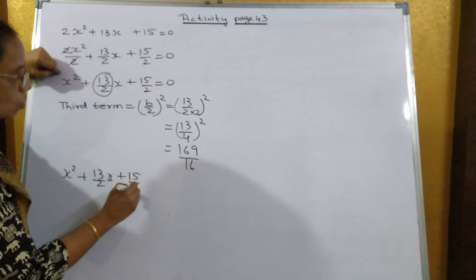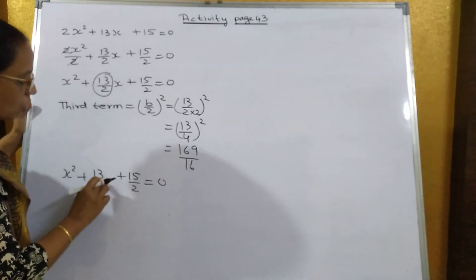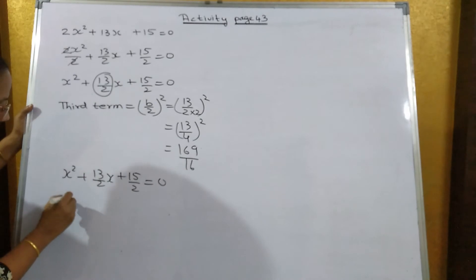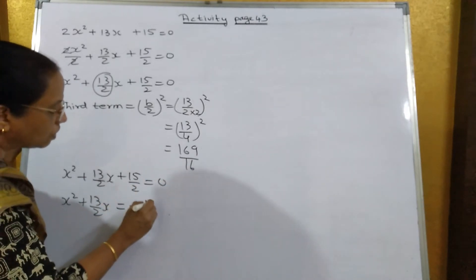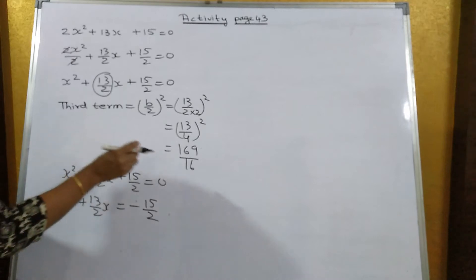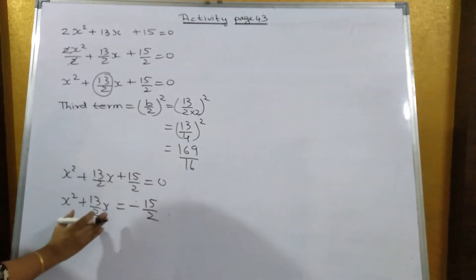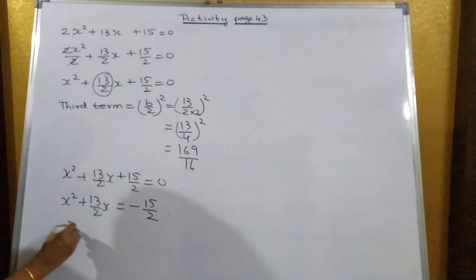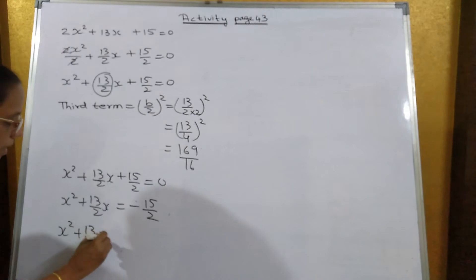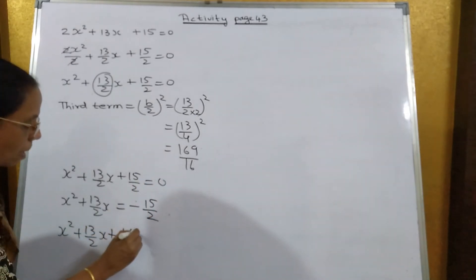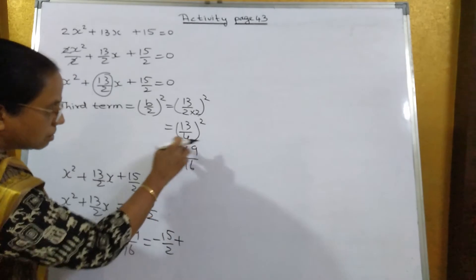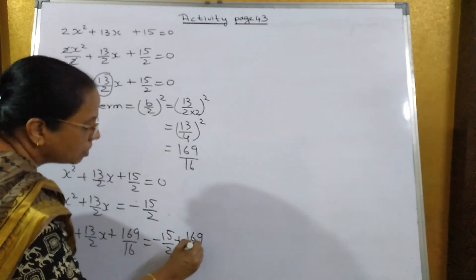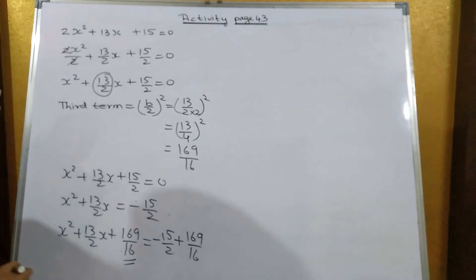Now the equation is x² plus 13 upon 2 x plus 15 upon 2 is equal to 0. Take 15 upon 2 to the other side, so your equation becomes x² plus 13 upon 2 x equals minus 15 upon 2. Now add the third term 169 upon 16 on the left hand side as well as on the right hand side.